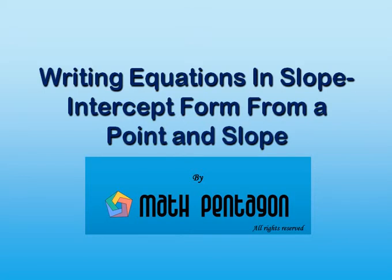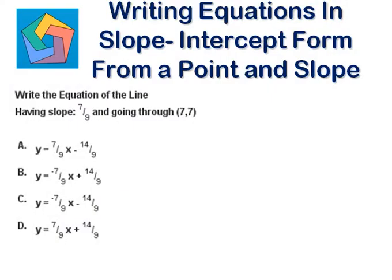Hi, today we are going to learn about writing equations in slope-intercept form from a point and slope. Let's look at a problem: write the equation of the line having slope 7 over 9 and going through (7, 7).